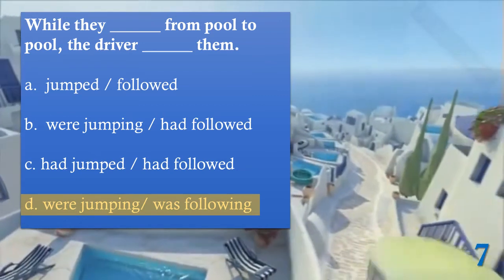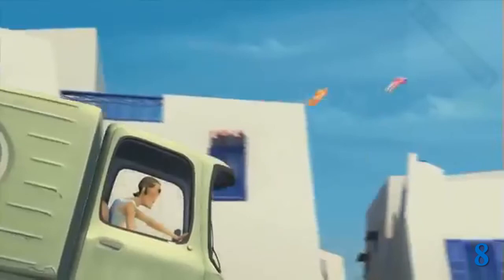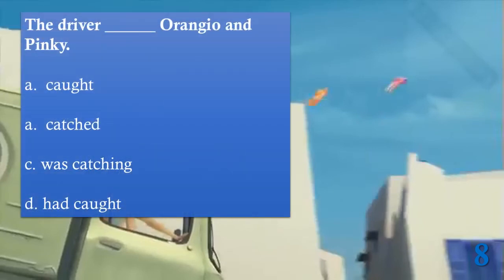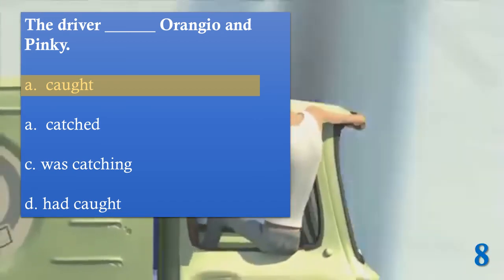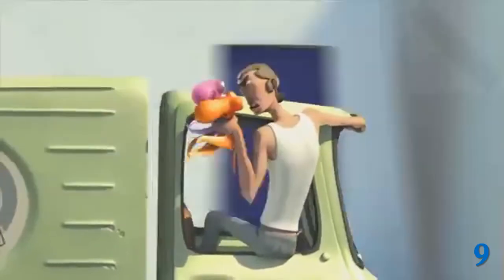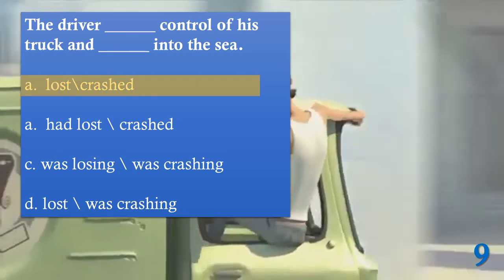While they were jumping from pool to pool, the driver was following them — parallel actions, no one interrupted. They were jumping and he was following. Then suddenly the driver grabbed Orangu and Pinky. After that, the driver lost control of his truck and it went into the sea — a series of actions in the past simple.